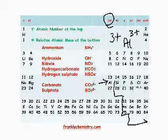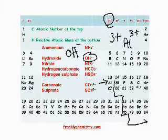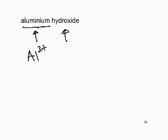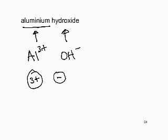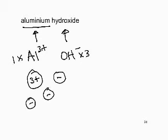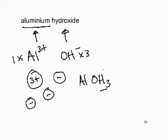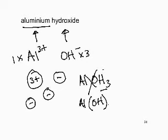We have Al³⁺ and OH⁻: a 3+ ion and a minus ion. To balance, we need three of the hydroxide ions. Since OH is a compound ion and we're multiplying it by 3, we must use round brackets: Al(OH)₃. This means one aluminium and three OH groups.